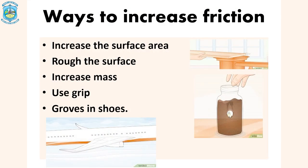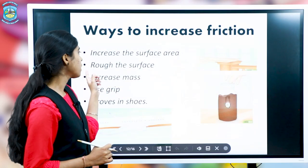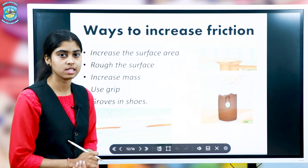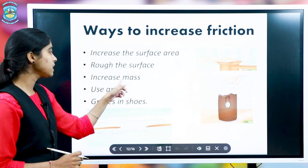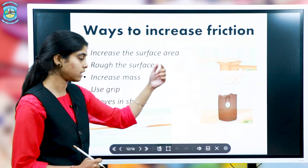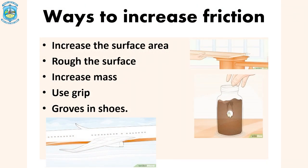Ways to increase friction: First, increase the surface area — as in parachutes, when opened the surface area is very large, increasing friction. Second, rougher the surface, the more friction produced — we can walk on rough surfaces but not smooth ones. Third, increased mass of the object also increases friction. Fourth, grooves in shoes help grip the ground so that we can run and play perfectly.